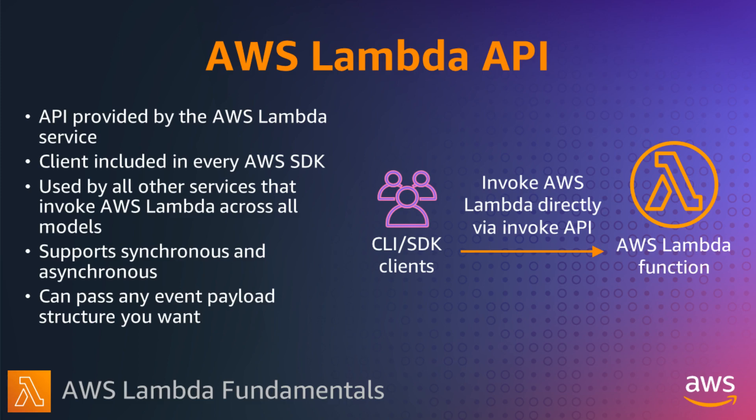An event trigger is a resource you configure allowing another AWS service to invoke your function when certain events or conditions occur. Your function can have multiple triggers, and each trigger acts as a client invoking your function independently, passing only its event to your function to process it. When you invoke a function, you can choose to invoke it synchronously or asynchronously, and you can pass any event payload structure, making it extremely flexible.